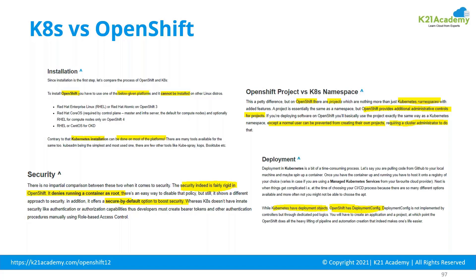Then there's deployment. Doing a deployment in Kubernetes is time-consuming — it's a lot of work in itself. In OpenShift there is a concept called deployment config, which is conceptually similar but much better implemented. The way deployments are done is slightly different between Kubernetes and OpenShift — it's not done using controllers in the same way.